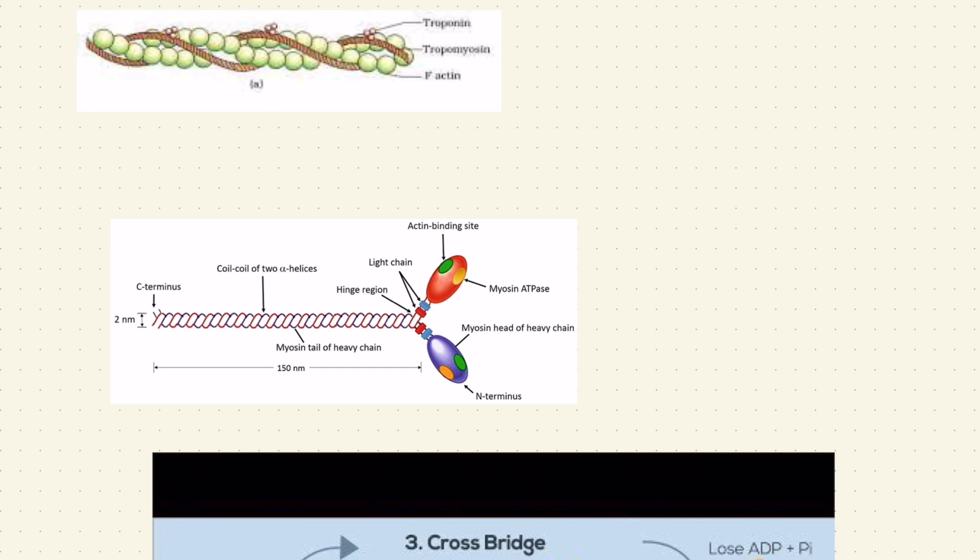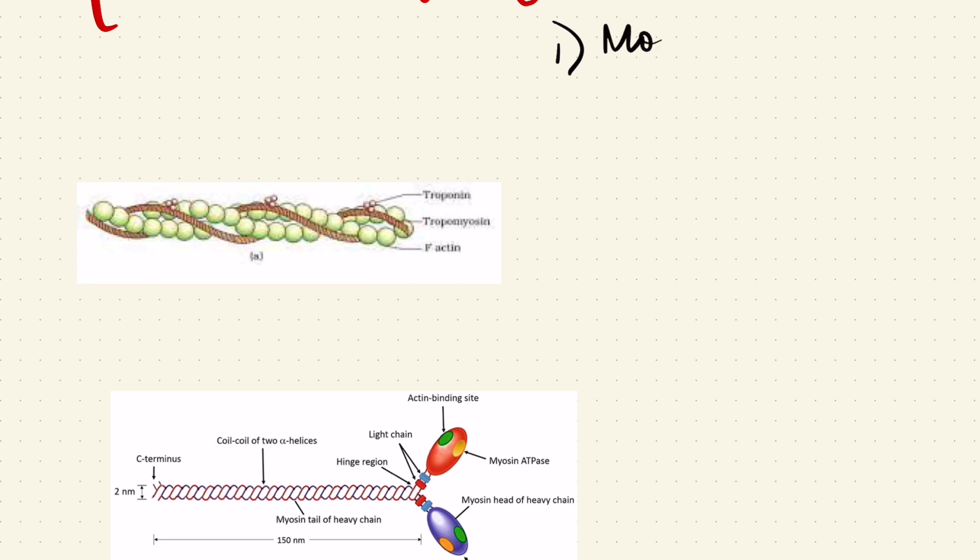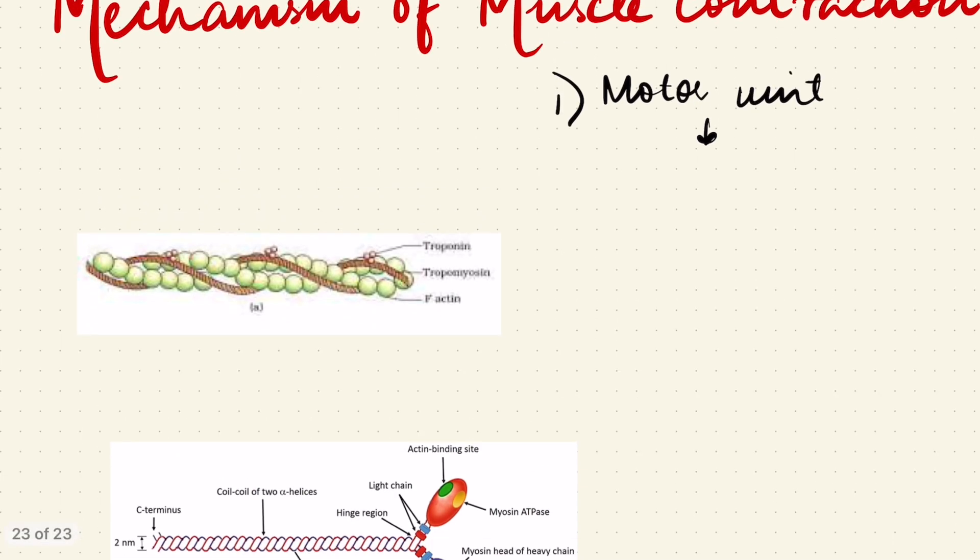All of this interacts in a manner to produce muscle contraction. Before studying about the theory of muscle contraction, that is the sliding filament theory, I want you to know about two definitions. The first definition is the motor unit, because it is the motor unit which is responsible for the muscles to contract. A motor unit is a motor neuron, which I have talked about in detail in my videos on nerve conduction, along with the muscle fibers that it supplies.